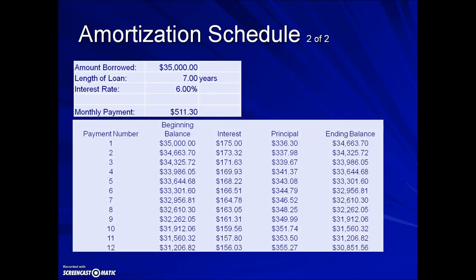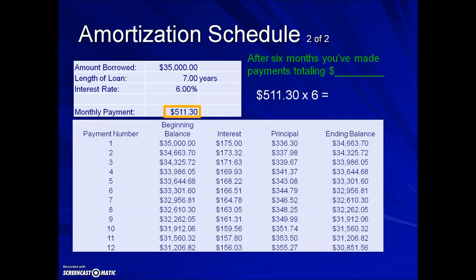In this next example, we have a portion of an amortization schedule for a loan of $35,000 for seven years at an interest rate of 6%, with a monthly payment of $511.30. The first question asks: after six months, you've made payments totaling how much? We take the monthly payment and multiply by six, giving us a total amount paid of $3,067.80.